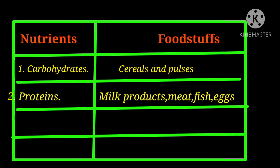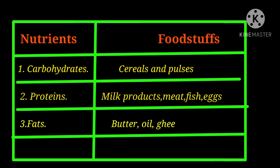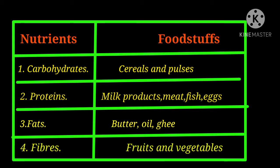The second nutrient is protein — we get it from milk, milk products, meat, fish, and eggs. The third nutrient is fats — we get it from butter, oil, and ghee. And fourth is fibers — we get fibers from fruits and vegetables.